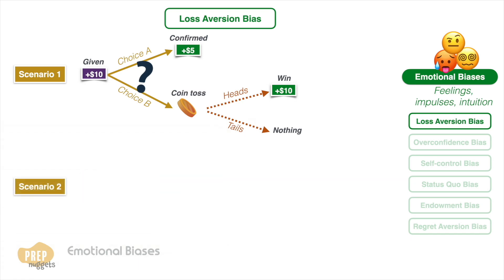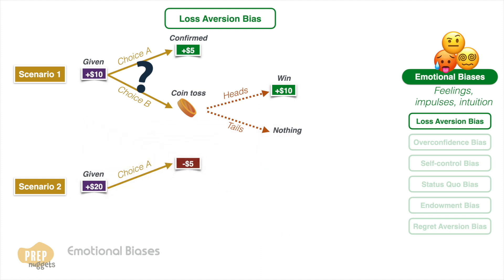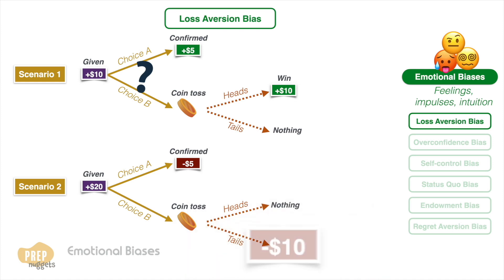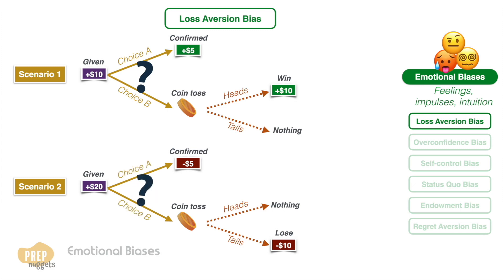In scenario two, you're given twenty dollars and you have a choice to either take a five dollar loss with certainty, or flip a coin and lose nothing if it lands heads up but lose ten dollars if it lands tails up. Which would you choose in this case?